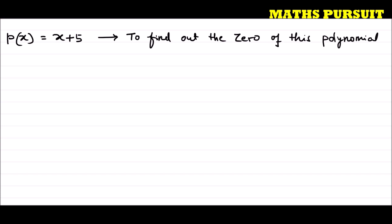So what does it mean to find out the zero of this polynomial? That means we need to find out when p(x) will be zero. This is what we need to do.